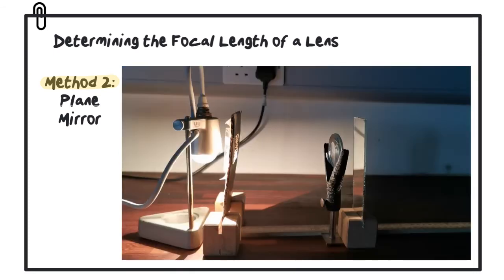The reason for this is as light leaves the object, it enters the lens and is refracted such that when it leaves the lens, it strikes the mirror parallel. When it hits the mirror, it reflects back onto itself, and the light travels back towards the lens again, parallel.